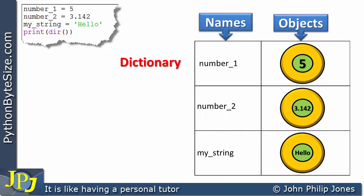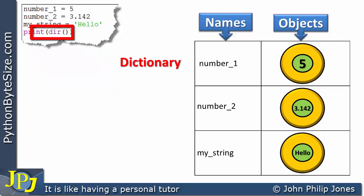When you're writing a computer program to implement some solution or algorithm, it's often useful to remind yourself as the programmer of the names that exist in the code you're currently writing — in other words, looking at the namespace for the area of code you're currently working on. This can be achieved using this line here, where we print what this returns. This function, if you look in the brackets, takes nothing in.